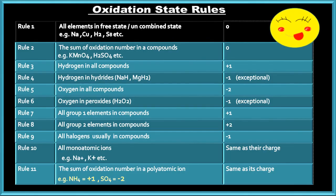Rules for Assigning Oxidation State. Rule No. 1: All elements in the free state or uncombined state have an oxidation number equal to zero. All elements in the free state, such as sodium, copper, hydrogen, sulfur, etc., have an oxidation state equal to zero.